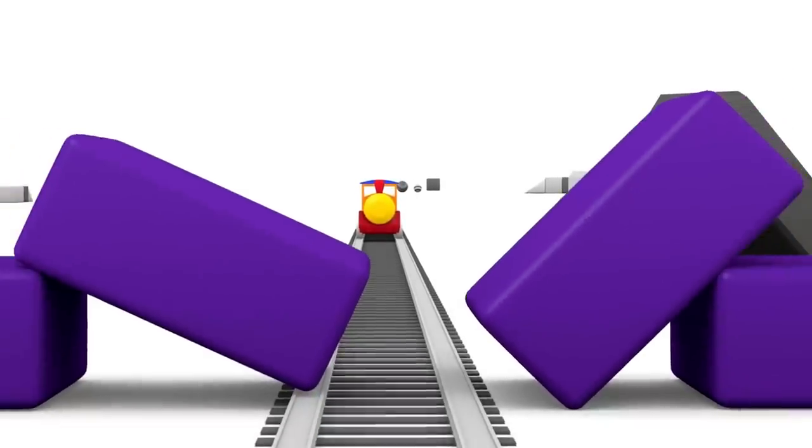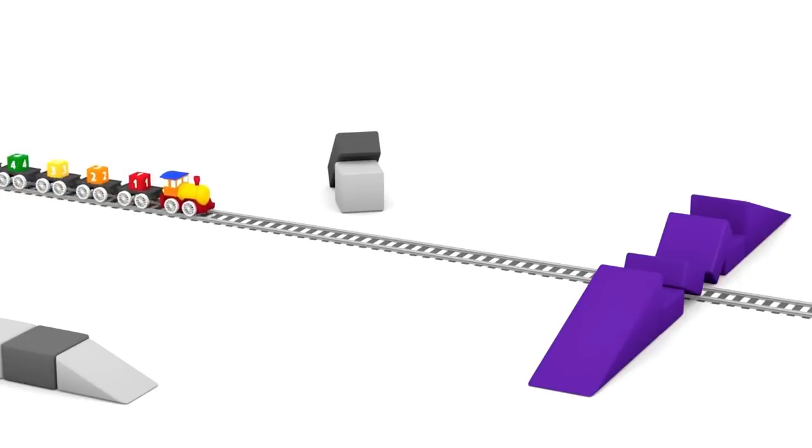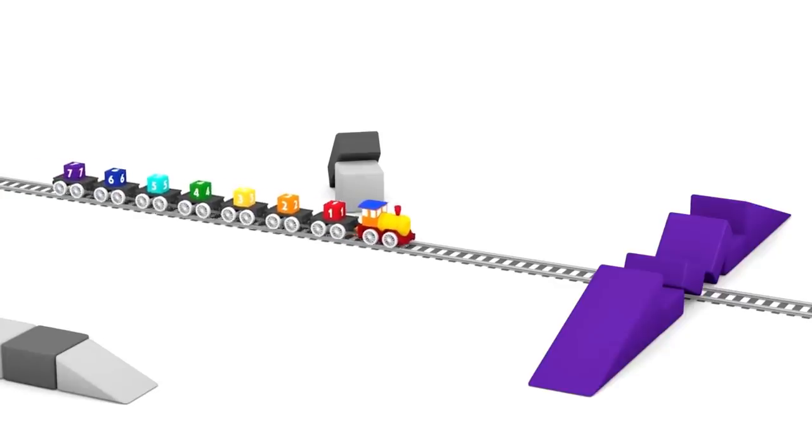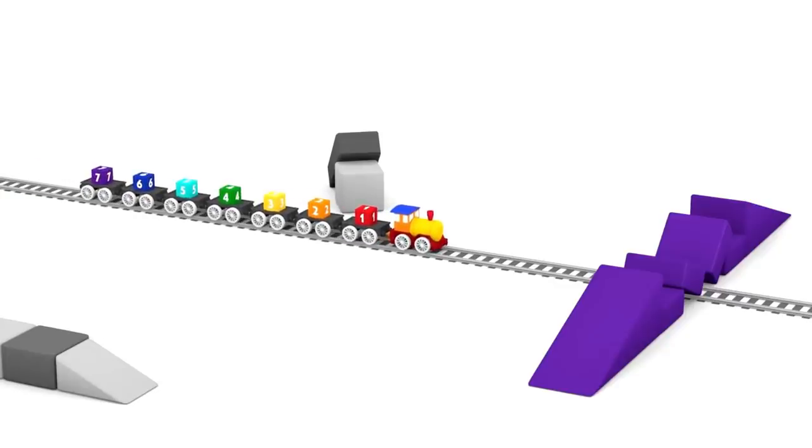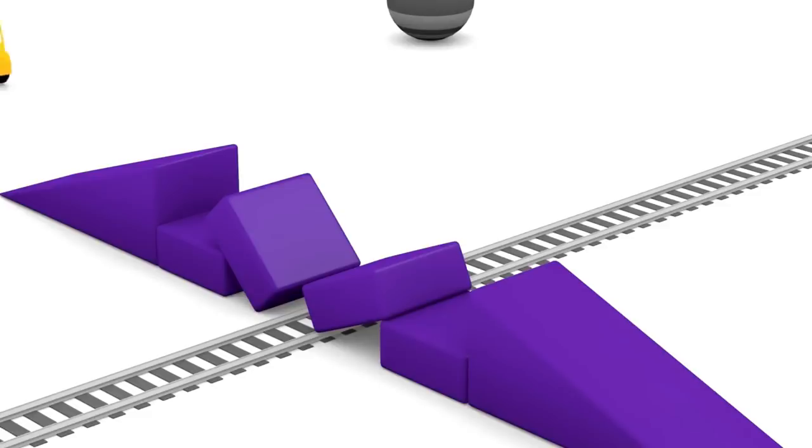Oh dear. The purple bridge over the railway tracks has broken. The railway is blocked because the blocks that made the bridge are on the tracks. But who will come and help the train to continue its journey?